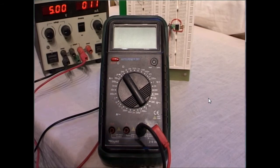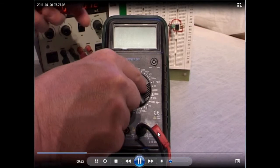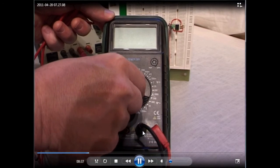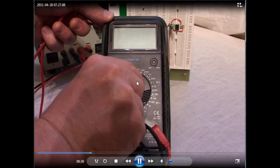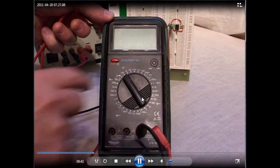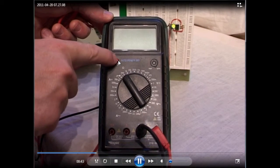You need to make sure the probes are positioned as shown here in the volts and common sockets, and you can adjust the range using the dial. You switch the meter on here.